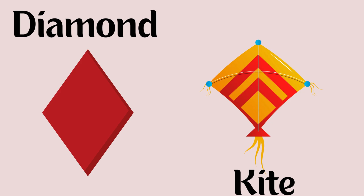Diamond. Let's identify a thing which is diamond in shape. Kite.